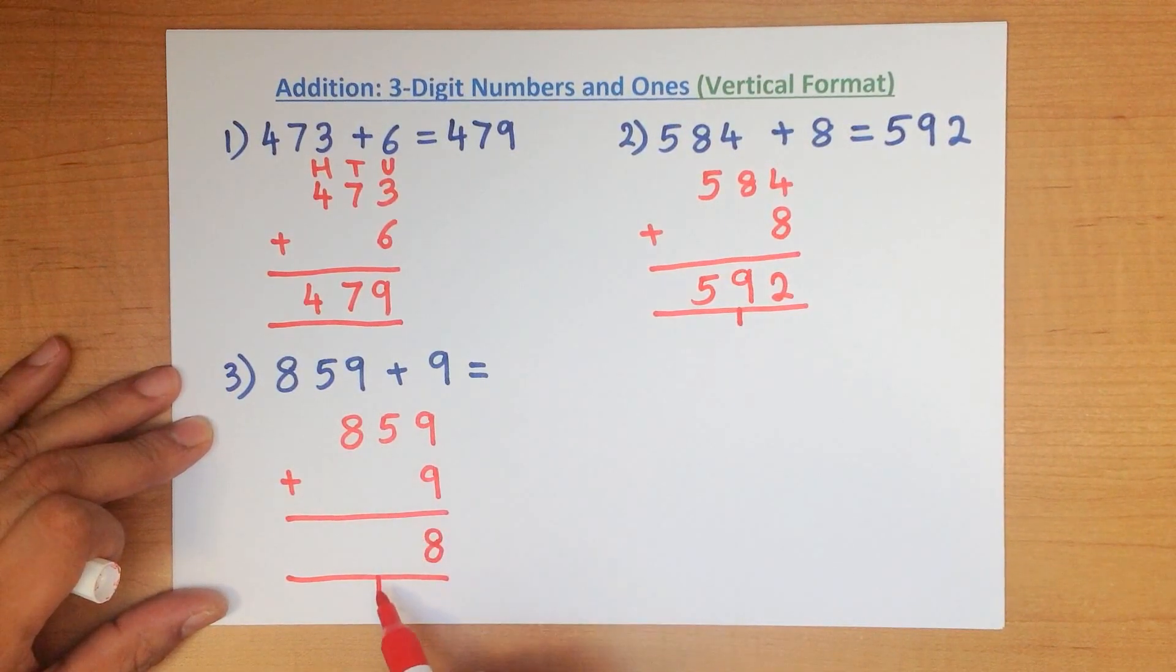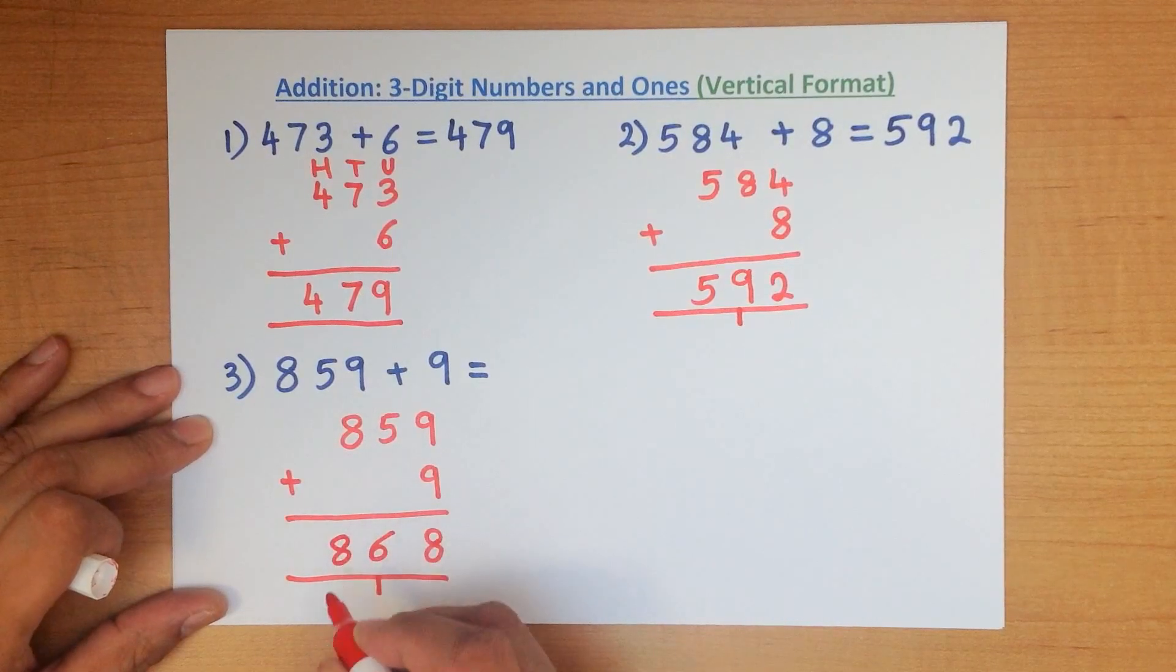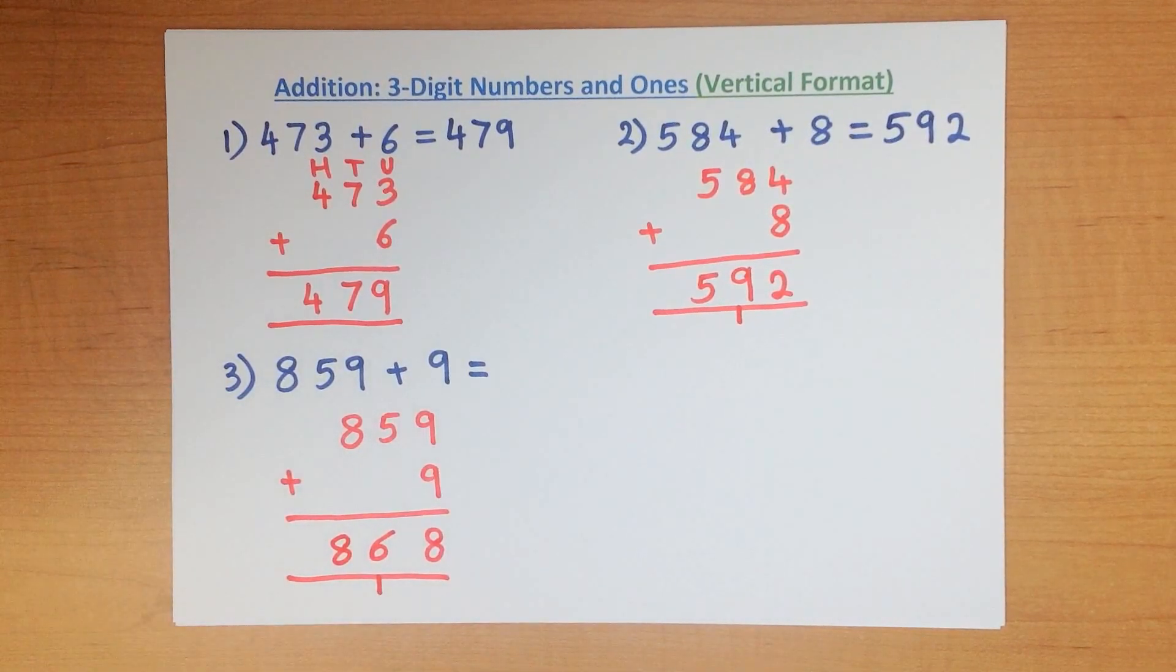5 plus 0 plus 1 is? 6. 8 plus 0 is? 8. And we have our answer.